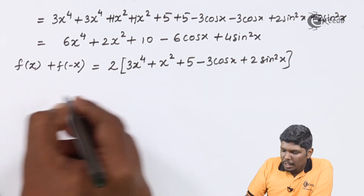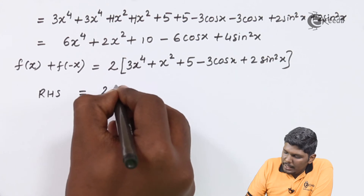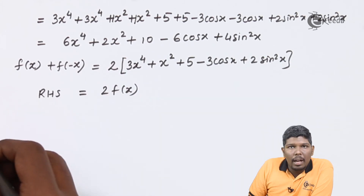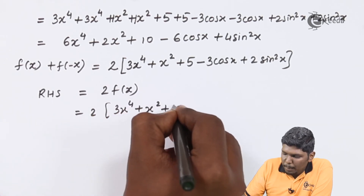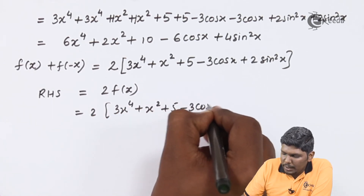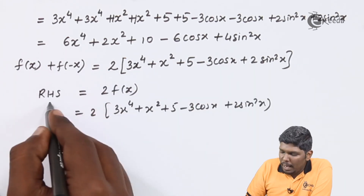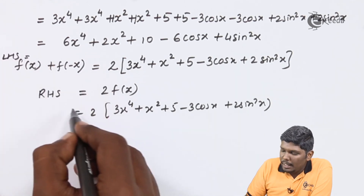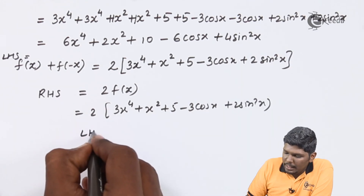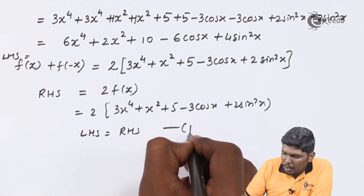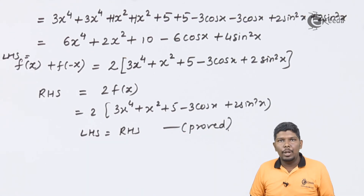This is our LHS. Now consider the RHS: RHS was twice f(x), and f(x) is 3x⁴ plus x² plus 5 minus 3cos(x) plus 2sin²(x). Comparing both parts, it is clear that LHS equals RHS. Hence this is proved.